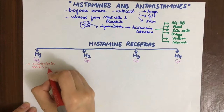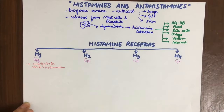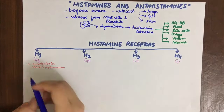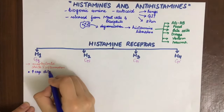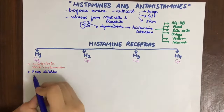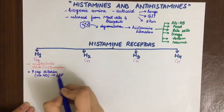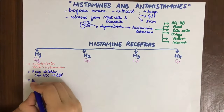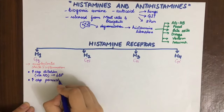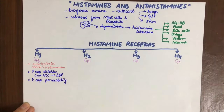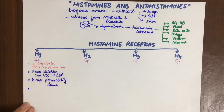H1 mediates its effects primarily through five mechanisms. First, it increases capillary dilatation via nitric oxide release from vascular smooth muscle, thereby decreasing blood pressure and contributing to shock. Second, it increases capillary permeability by contraction of endothelial cells through increasing intracellular calcium concentration.